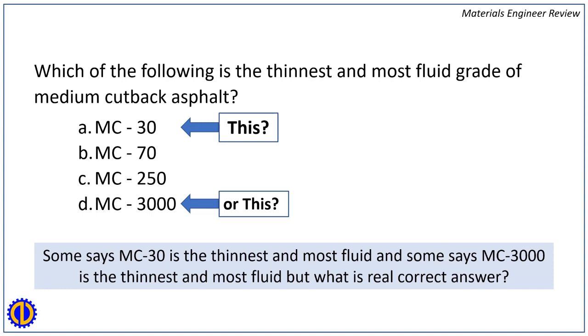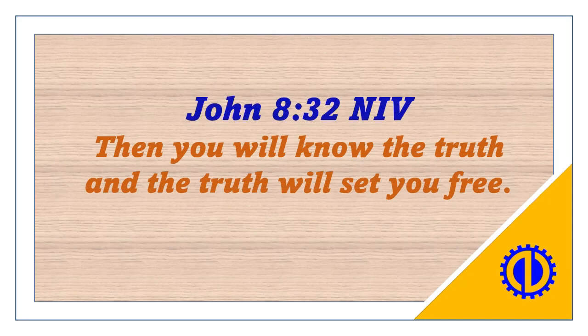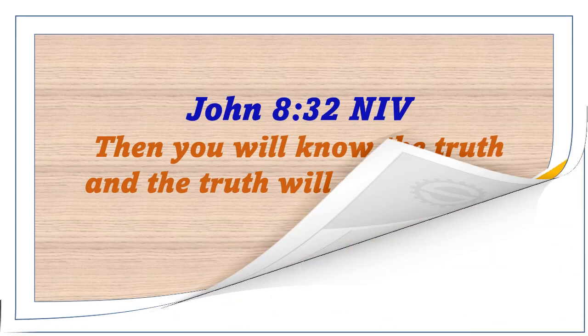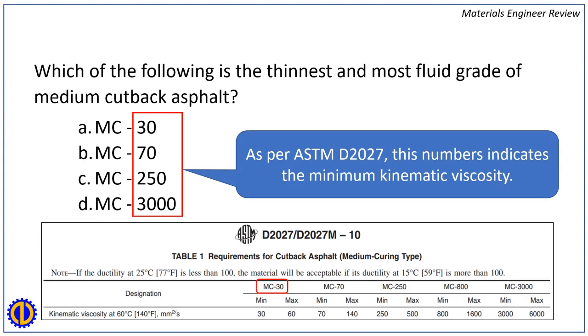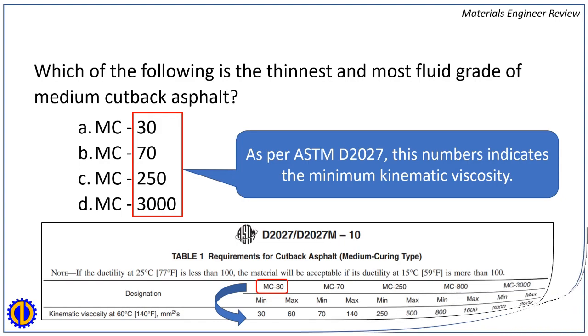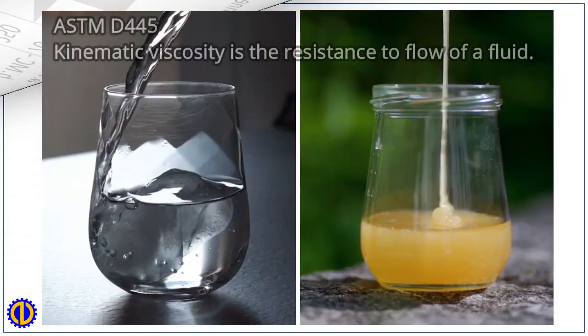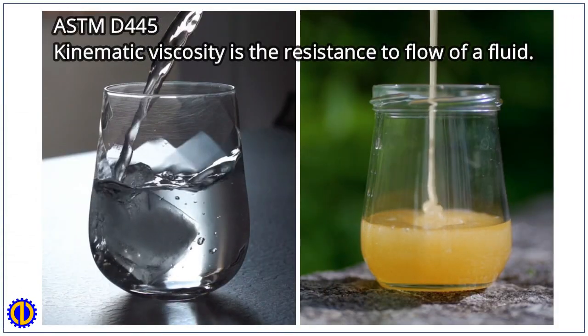John 8:32 — 'Then you will know the truth and the truth will set you free.' As per ASTM D2027, these numbers indicate the minimum kinematic viscosity, tested under ASTM D445.